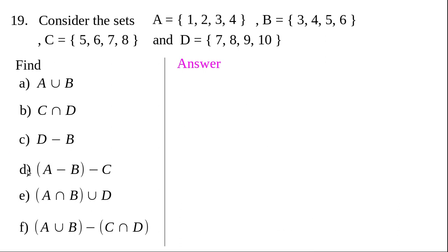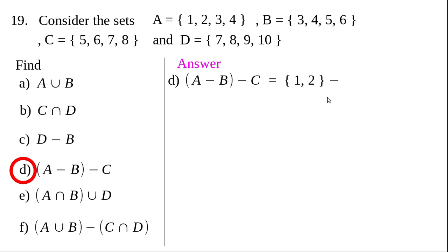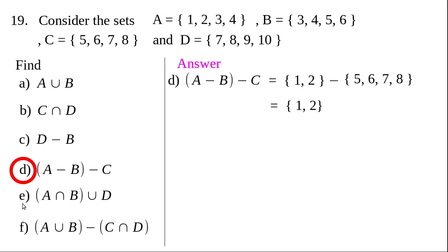Question (d): A minus B minus C. First find A minus B — the set of all elements in A but not in B — which gives {1, 2}. Then {1, 2} minus C, which is {1, 2} minus {5, 6, 7, 8}. Since 1 and 2 are not in the second set, the answer is {1, 2} itself.